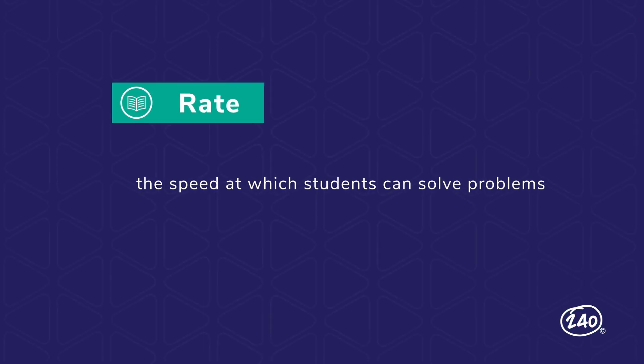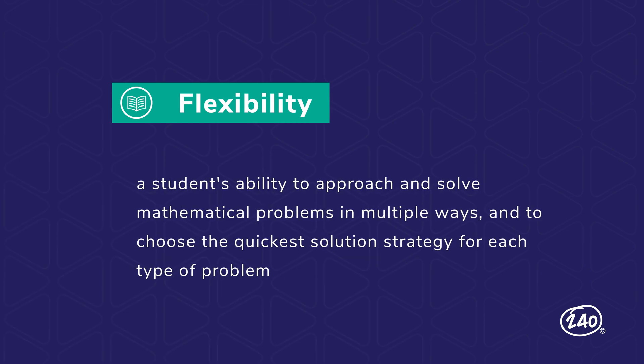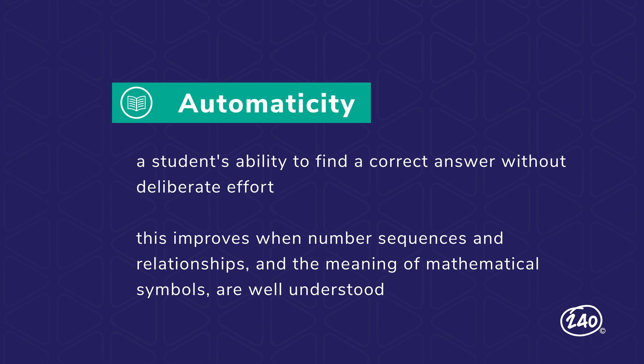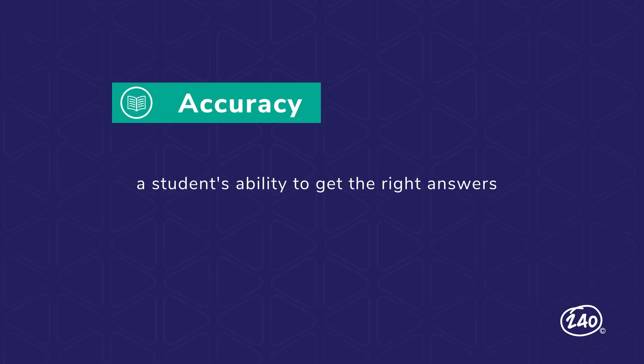Specific terms include rate, flexibility, automaticity, and accuracy. Rate is the speed at which students can solve problems. Memorizing math facts and practicing these facts helps students solve computational problems quickly. Flexibility means a student's ability to solve mathematical problems in multiple ways and to choose the quickest solution strategy for each type of problem. Automaticity is a student's ability to find a correct answer without deliberate effort. This improves when number sequences and relationships and the meaning of mathematical symbols are all well understood. Accuracy describes a student's ability to get the right answers. Understanding math concepts, facts, and applications all improve accuracy.